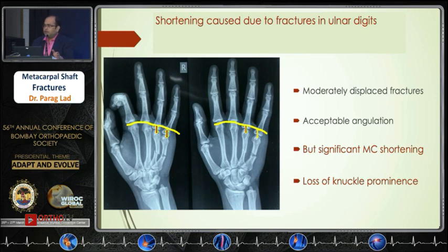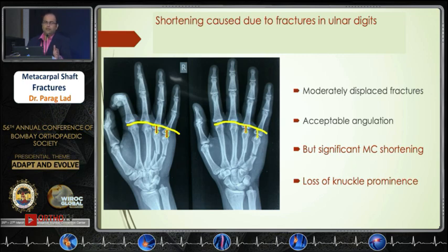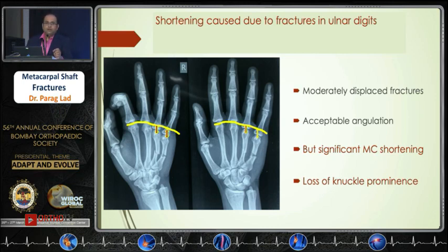After malrotation, another important point is shortening. As seen on the X-ray on the left side, the angulation deformity is not very severe, but if you see the length of the metacarpal of the fourth and fifth digit, it is definitely shortened. If these patients unite in this position, their grip strength is going to be affected.